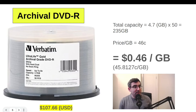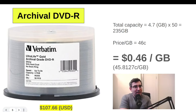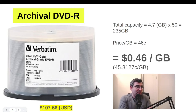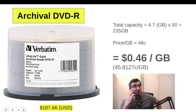Next is archival DVDs. This is Verbatim's product called Ultralife Gold Archival Grade DVD-R with hard coat — gold on the underside, but not an M-Disc. The price is $107.66. Total capacity is 4.7GB per disc times 50 discs, which equals 235GB. Dividing the retail price by total capacity yields $0.46 per gigabyte — just under 50 cents per gig.